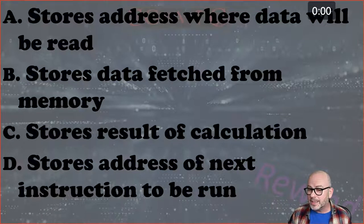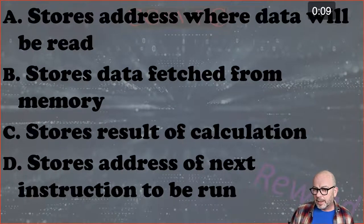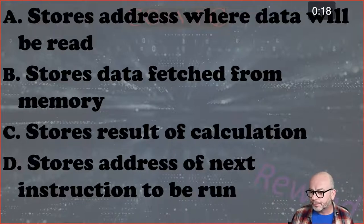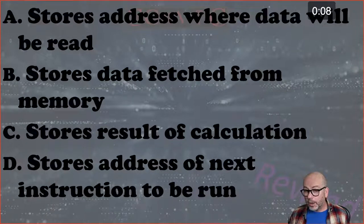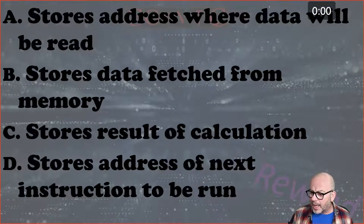We've got: stores the address of, stores address where data can be read - a bit of a clue in the title there - stores data fetched from memory, stores result of calculation, and stores address of next instruction. We've got 11 people in, which is good. Any ideas? What about 'stores result of calculation' - surely you can remember that one? This one always causes problems in the exam; people get them mixed up.